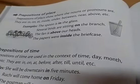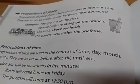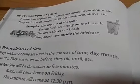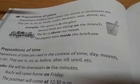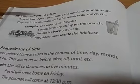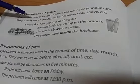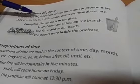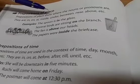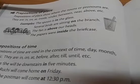Prepositions of place show where the nouns or pronouns are — where a noun is present, whether it is near or far, in which place it is present. The prepositions of place are: in, on, at, inside, under, between, near, above, etc.